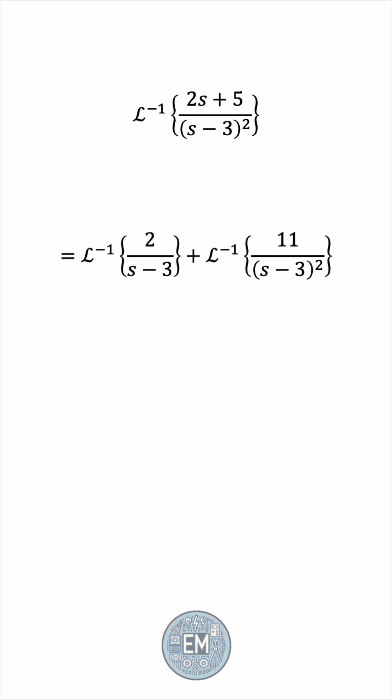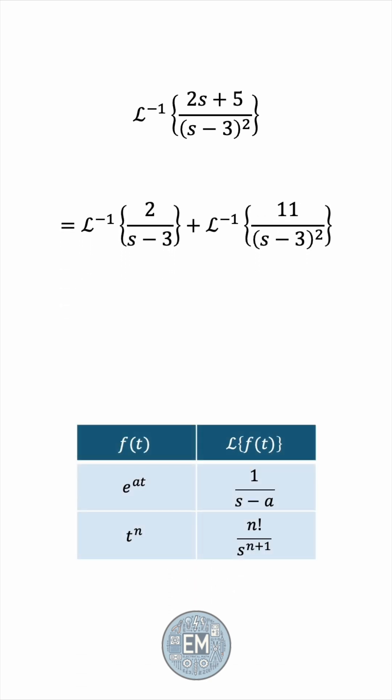The first of these has an immediate result in the table. That's 2 times e to the 3t.